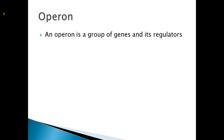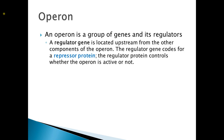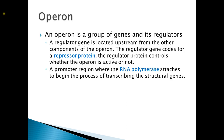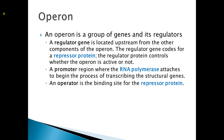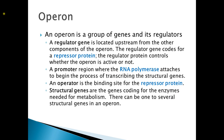An operon is a group of genes and its associated regulators. There are four main components to an operon. A regulator gene, which will be located upstream from the other components of the operon — the regulator gene codes for the repressor protein. There is a promoter region where the RNA polymerase binds; RNA polymerase is needed for the transcription process. The third component is an operator region, and it serves as the binding site for the repressor protein. Finally, there are structural genes, which code for the enzymes and proteins needed for the metabolic process. There can be one or more structural genes in an operon.